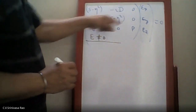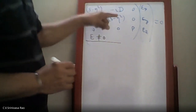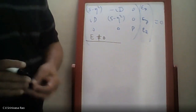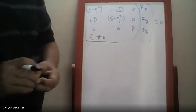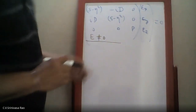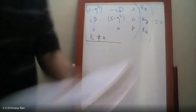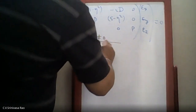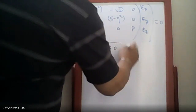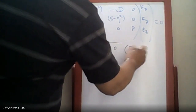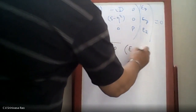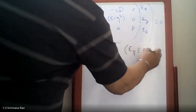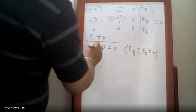For non-trivial solutions, the condition is that the determinant of the matrix must vanish. The condition we get is E_parallel equal to zero, which means the longitudinal electric field E_parallel is not equal to zero. This is one condition.